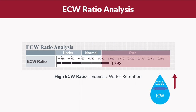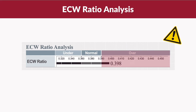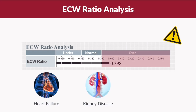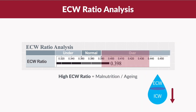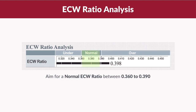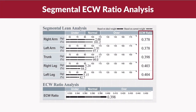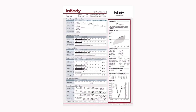It is important to pay more attention to a high ECW ratio, as excess water retention could be due to various health conditions such as heart failure and kidney disease. The excess water retention could also be due to inflammation or injury. Moreover, a high ECW ratio can indicate malnutrition or aging, because loss of muscle causes a decrease in intracellular water. It is advisable to aim for an ECW ratio in the normal range of 0.36 to 0.39. You can also find the ECW ratio for each segment of your body in the segmental lean analysis above.